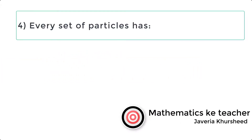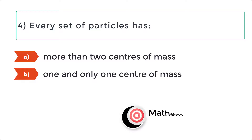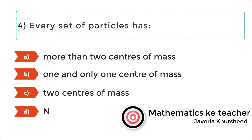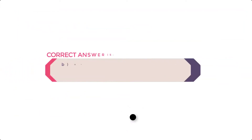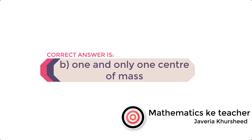Question 4: Every set of particles has: A. More than two centers of mass, B. One and only one center of mass, C. Two centers of mass, D. None of these. Correct answer is B: One and only one center of mass.